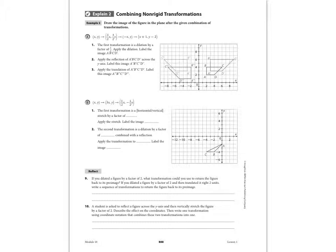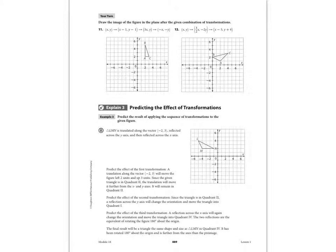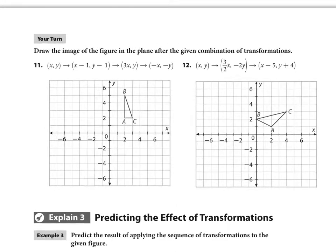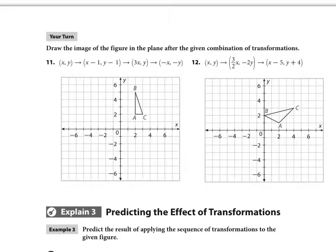Now we're going to start combining non-rigid transformations, and we do this in the form of using coordinate rules. I'm not going to actually do anything on this page, but you'll see here in example A you have all these coordinate rules. Some of these will be rigid motions, but some of them aren't. At the top of page 889, let's do some of these.